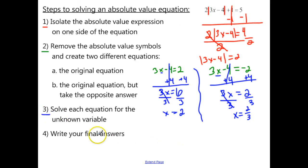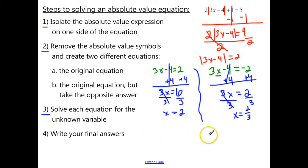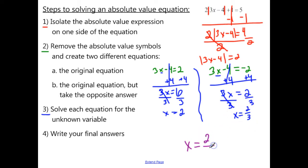Now, on to step 4: write your final answers. For our final answer we just have two different answers for x. Out of habit, I'll put the smaller number first: x equals 2 thirds, and 2. So those are my two different answers for x.